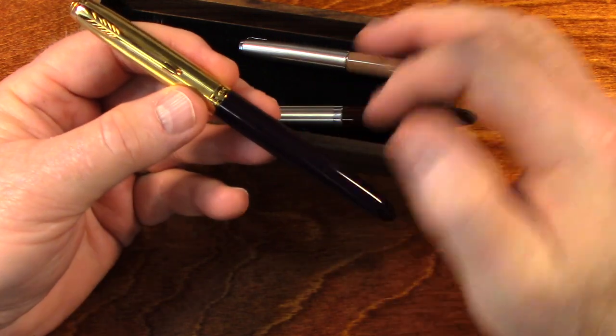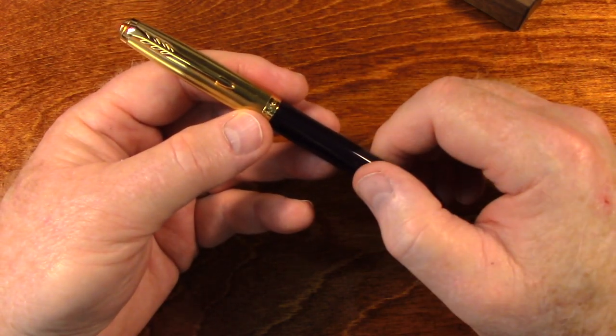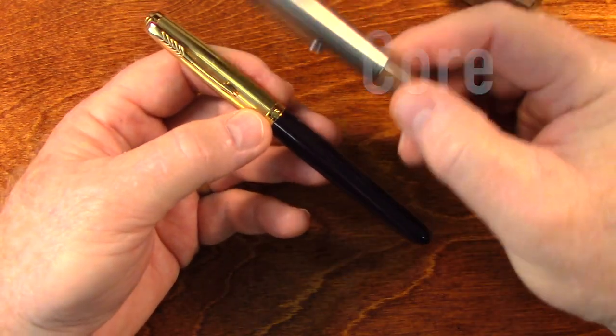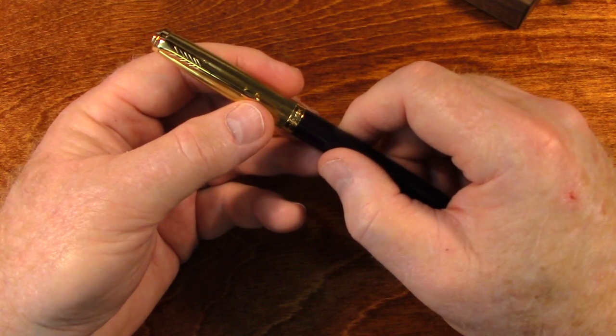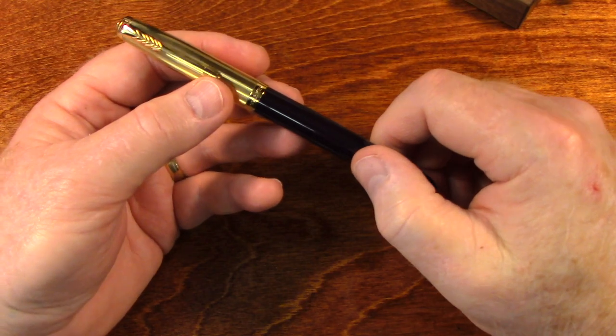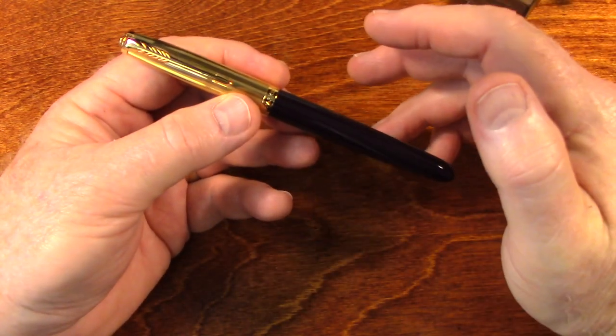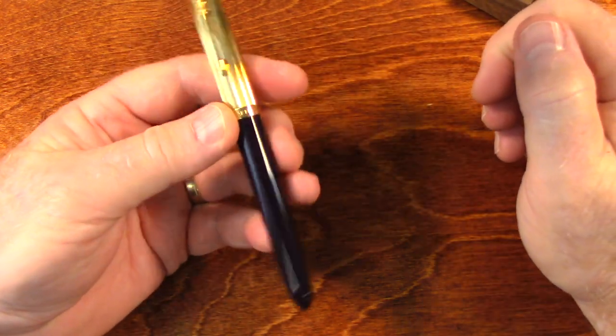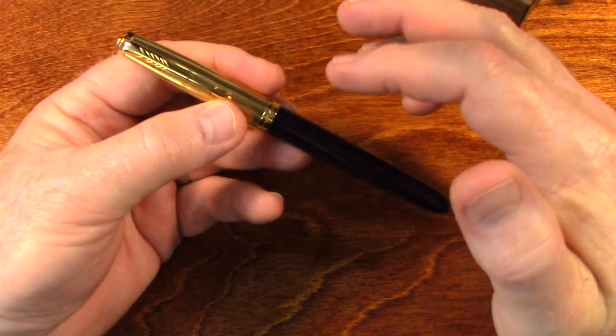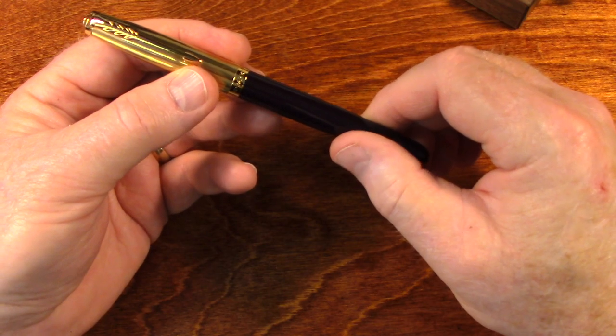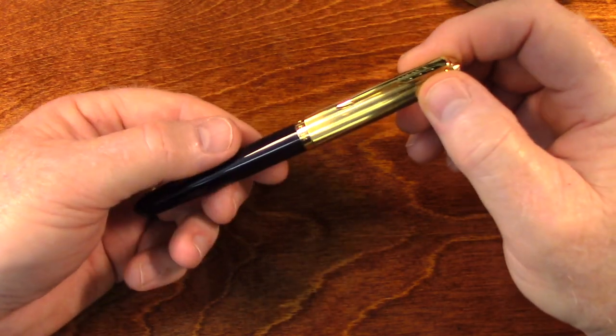Now this Parker, this 51 reissue, also comes in a standard. I think they call it a core model. It comes with a Lustreloy cap like this. And the nib on that core model is not gold. It's stainless steel. But other than that, they're pretty much the same pen. This is just a little fancier. And it might write smoother because of the gold nib. It's a very nice pen. Barrel is made out of some kind of resin. And these pens are hand assembled in France. It's a very nice pen. I really like this. And again, time will tell just how good of a pen this is.